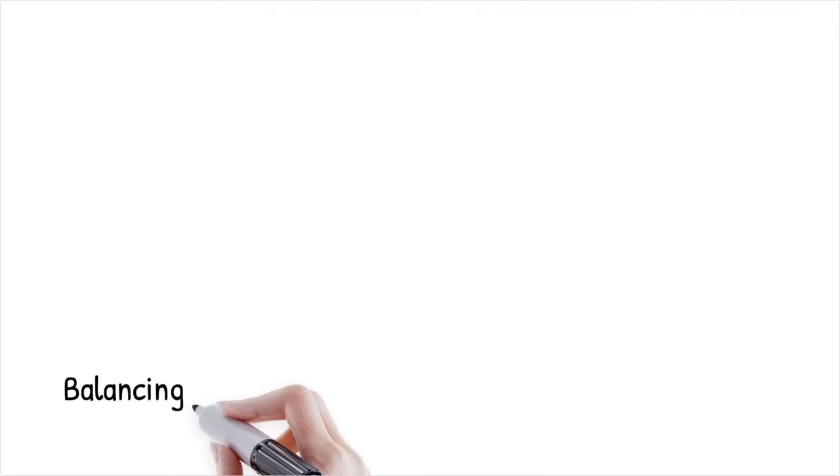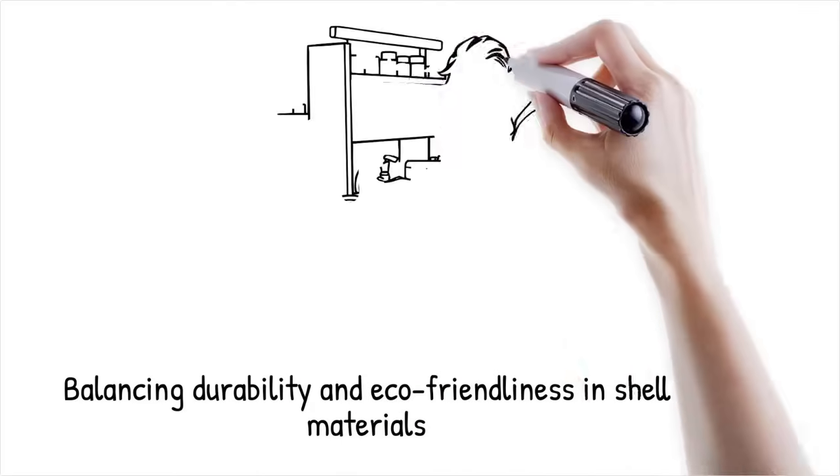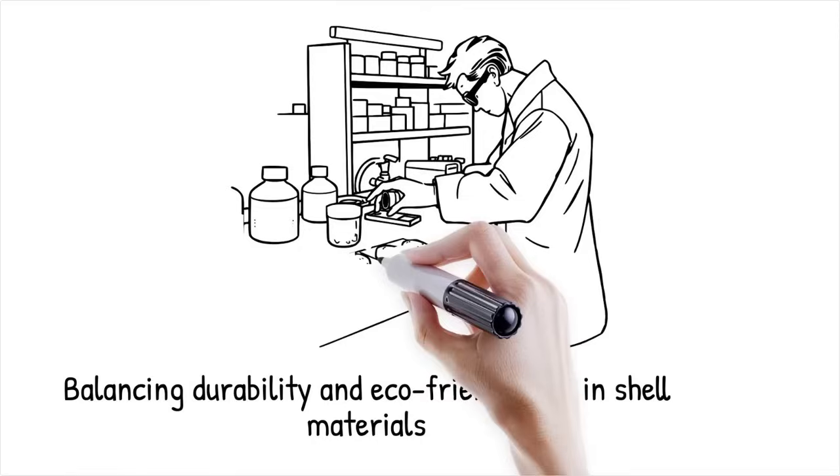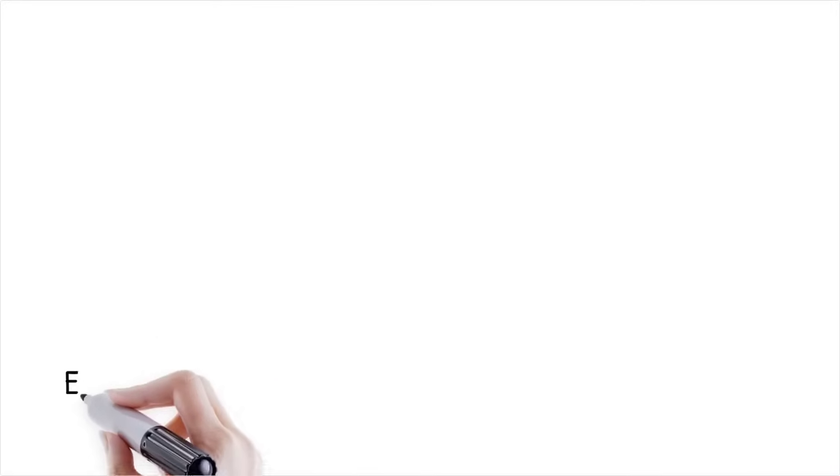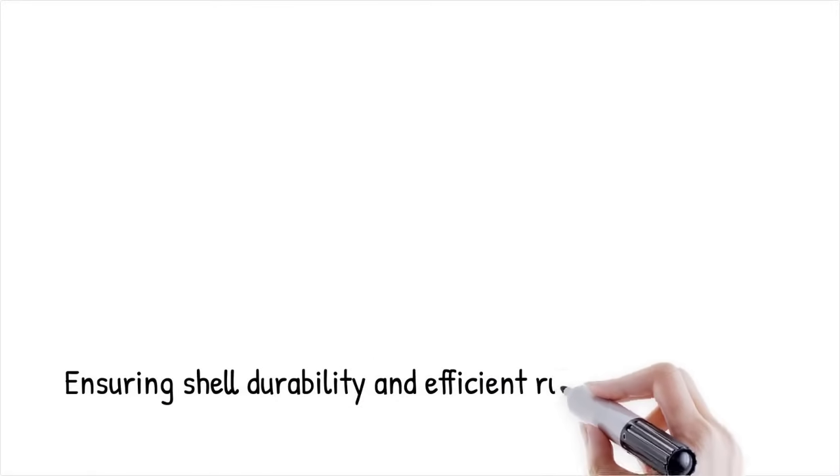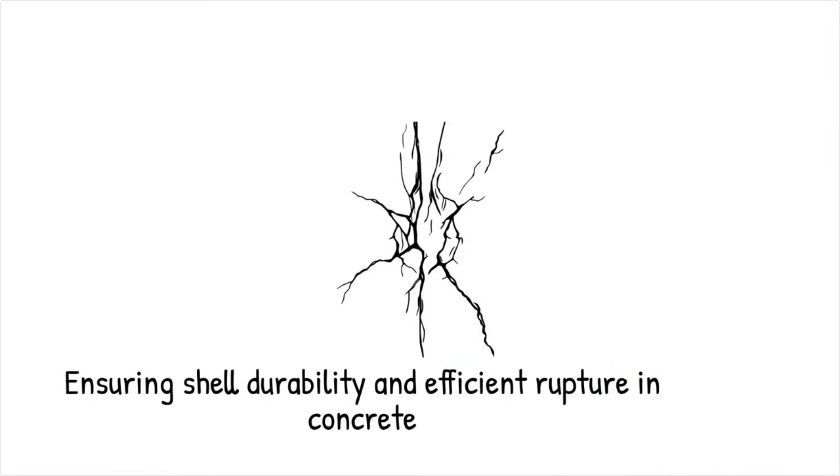The choice of shell material is crucial for balancing mechanical robustness and responsiveness to damage stimuli. Polymers like polyurea, polyurethane, and melamine formaldehyde provide durability while biodegradable shells enhance eco-friendliness. The shell must withstand material processing conditions while ensuring efficient rupture upon crack formation, allowing healing agents to flow and polymerize.